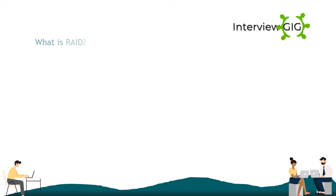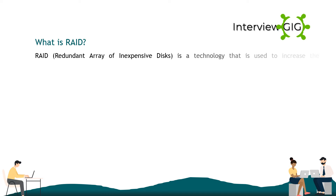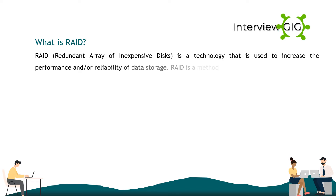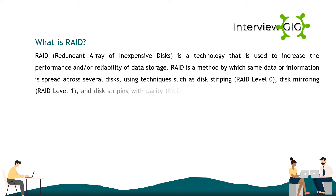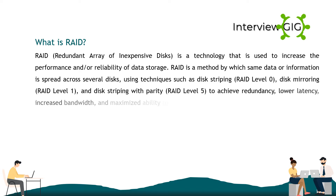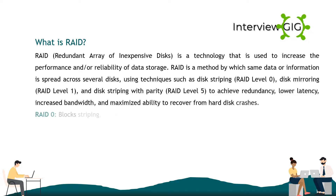What is RAID? RAID, Redundant Array of Inexpensive Disks, is a technology used to increase the performance and/or reliability of data storage. RAID is a method by which the same data is spread across several disks using techniques such as disk striping (RAID level 0), disk mirroring (RAID level 1), and disk striping with parity (RAID level 5) to achieve redundancy, lower latency, increased bandwidth, and maximized ability to recover from hard disk crashes.